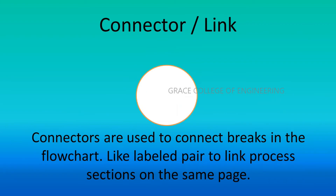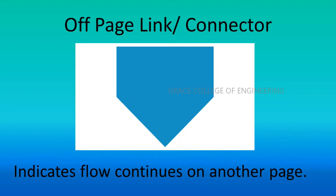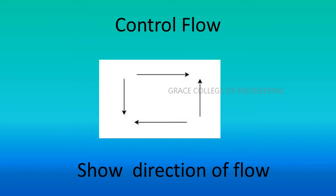The connector or link is a round symbol. Connectors are used to connect breaks in the flowchart, like a labeled pair to link process sections on the same page. The off-page connector indicates the flow continues on another page. Control flow arrows show the direction of flow.